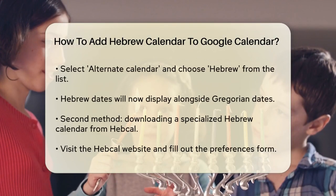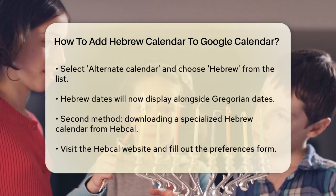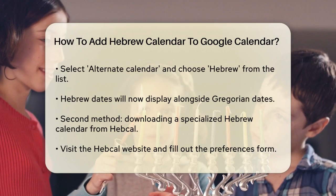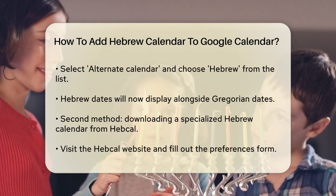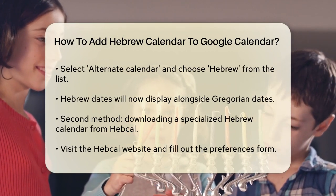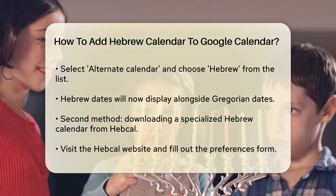Once you're in the Settings, navigate to the General tab. Here, you'll find an option to select an alternate calendar. Choose Hebrew from the list of available calendars.